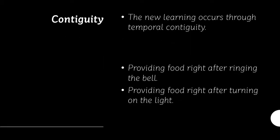Let's focus on stages and essential principles. The first one is contiguity. New learning occurs through temporal contiguity. To form the association, the unconditioned and conditioned stimuli must occur at the same time — for example, providing food right after ringing the bell, or providing food right after turning on the light.